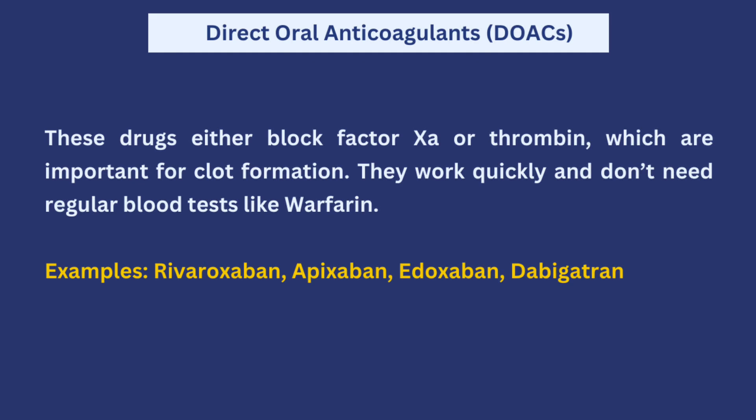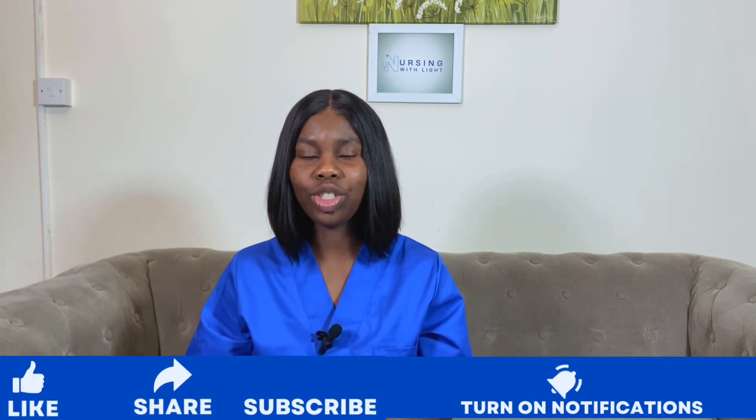Next are direct oral anticoagulants, known as DOACs. They work by blocking factor Xa or thrombin, similar to heparins, and slow down the blood clot formation process. They actually work very quickly and, unlike warfarin, they don't need regular blood tests. Examples include rivaroxaban, apixaban, and dabigatran. A simple way to remember this class is the suffix '-xaban' — whenever I see apixaban, rivaroxaban, or doxaban, I remember these are direct oral anticoagulants.